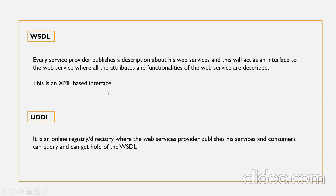Then comes WSDL. If you are a service consumer and you want to make use of a web service, you need to know all the details about it — what it does, how to consume it, what parameters it accepts, and what the return types are. Every service provider publishes a description of their web service that acts as an interface, where all attributes and functionalities are described. This is an XML-based interface called WSDL — Web Services Description Language. It can be interpreted with tools like SOAP UI, which displays attributes and functionalities and generates request and response for you. The service consumer can get the WSDL and understand the request and response parameters.